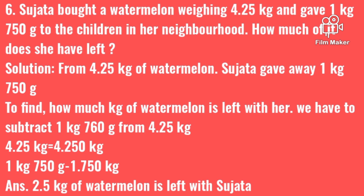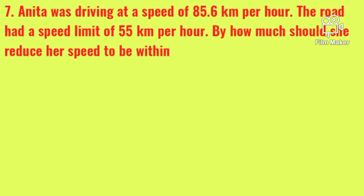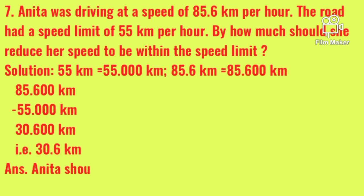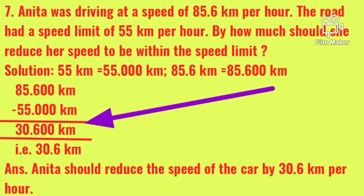Question number 7: Anita was driving at a speed of 85.6 km per hour. The road had a speed limit of 55 km per hour. By how much should she reduce her speed? We subtract 55 from 85.600. The answer is 30.6 km per hour. Anita should reduce her speed by 30.6 km per hour.